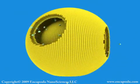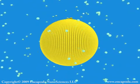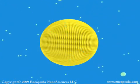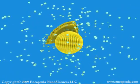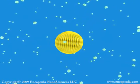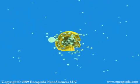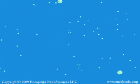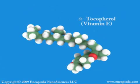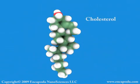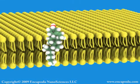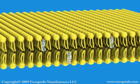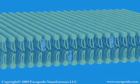Liposomes can encapsulate both water-soluble and fat-soluble drugs, which are slowly released as the liposome is broken down by enzymes and acids found in tissues and cells, especially at disease sites. Many fat-soluble compounds, including some drugs, can be incorporated into the phospholipid bilayer. For injection into animals, liposomes with cholesterol in their membranes are more physically stable in the bloodstream. Incorporating tocopherols into the membrane can increase the chemical stability of unsaturated phospholipids.